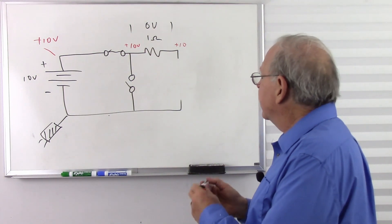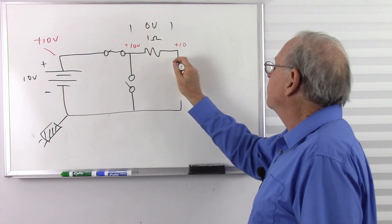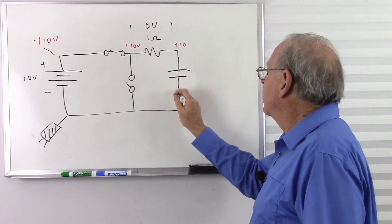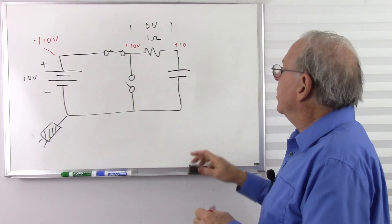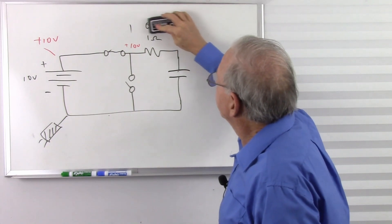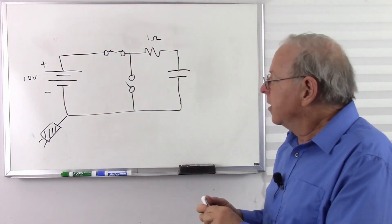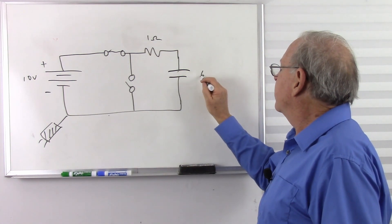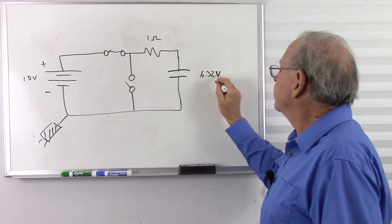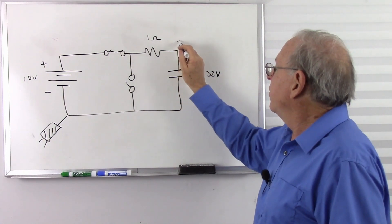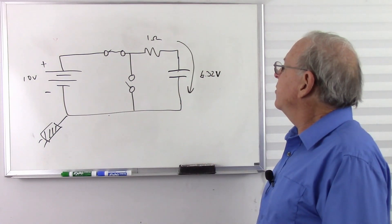But the other train of thought that can lead to that question, of course, is current flow. So let's get our clutter out of the way here. Let's say this has gotten up to 6.32 volts. And so there is now current flowing through here.